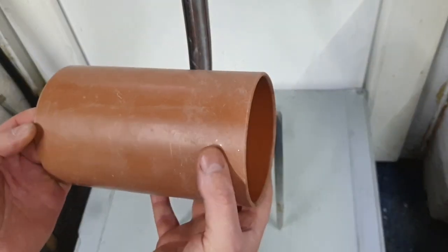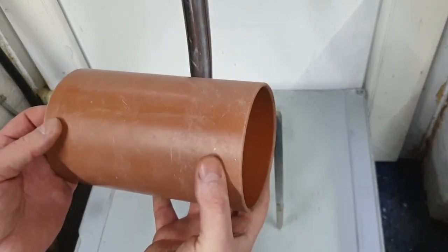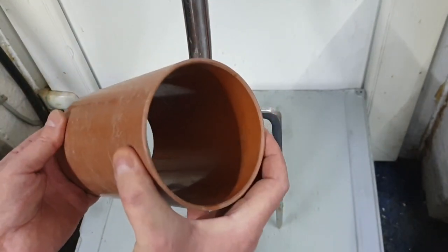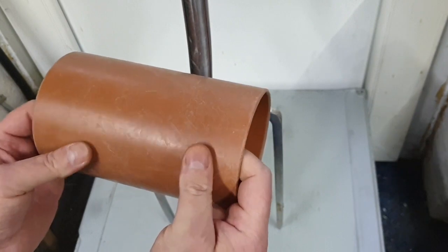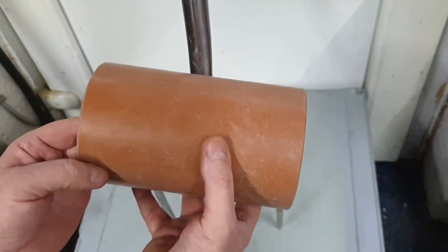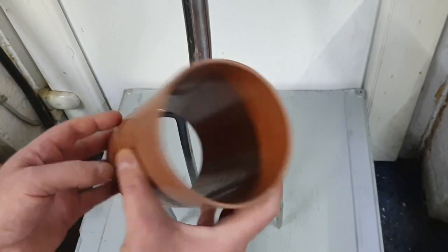So it's just an offcut of some soil pipe. It's important to use soil pipe rather than drainage pipe because soil pipe is a lot stronger. If you know a builder or if you're passing a builder's skip, more than likely you'll see a little offcut of this in the skip and I'm sure they won't mind you taking it.